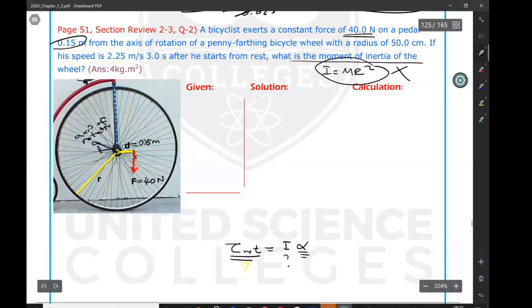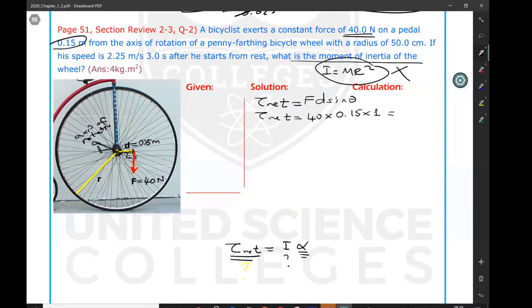I can use the definition of torque from section one and calculate the first needed thing, which is net torque. Torque net equals F·D·sin(θ). There's just one force acting on this bicycle tire. Sin(θ) is 90°, so just F and D you're going to multiply. Torque net is 40 N times 0.15 m, which equals 6 N·m.